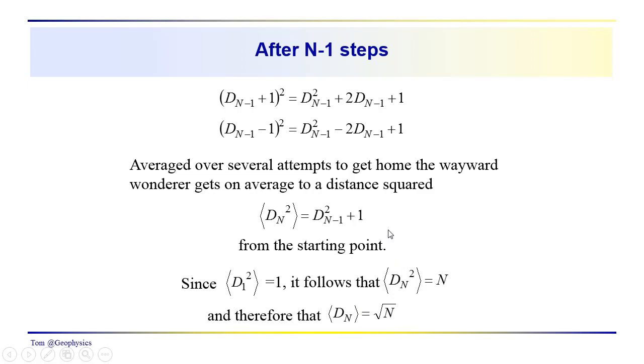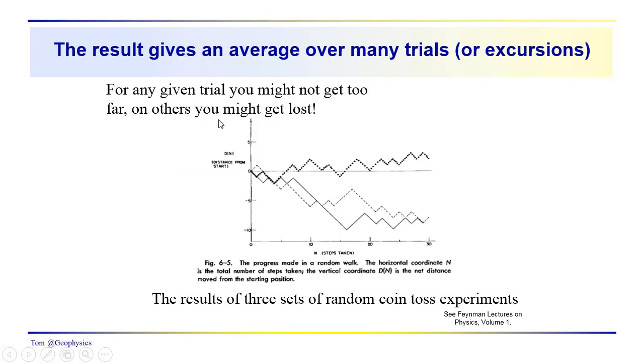This is telling us something pretty interesting. On average, if we take multiple trials, if we take 100 steps, we should end up about 10 steps on average away from our origin. We've taken 10 steps here, 20 steps here, 30 steps here. Sometimes we don't get too far, maybe only a couple steps. But after 30 steps, we get about 7 or 8 steps away. This example comes from Feynman's Lectures on Physics, Volume 1. These are results of three random coin toss experiments.